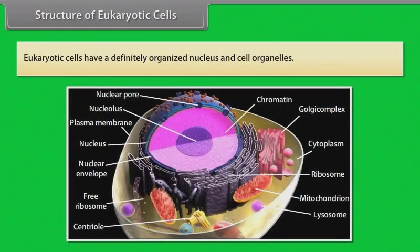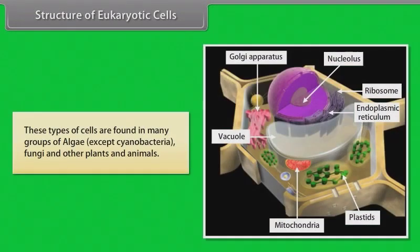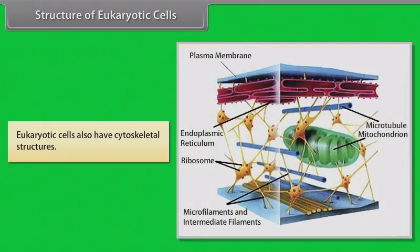Structure of eukaryotic cells: Eukaryotic cells have a definitely organized nucleus and cell organelles. These types of cells are found in many groups of algae except cyanobacteria, fungi, and other plants and animals. A typical eukaryotic cell consists of a cell membrane, nucleus and cytoplasm. Genetic material is organized in the form of chromosomes, and eukaryotic cells also have cytoskeletal structures.